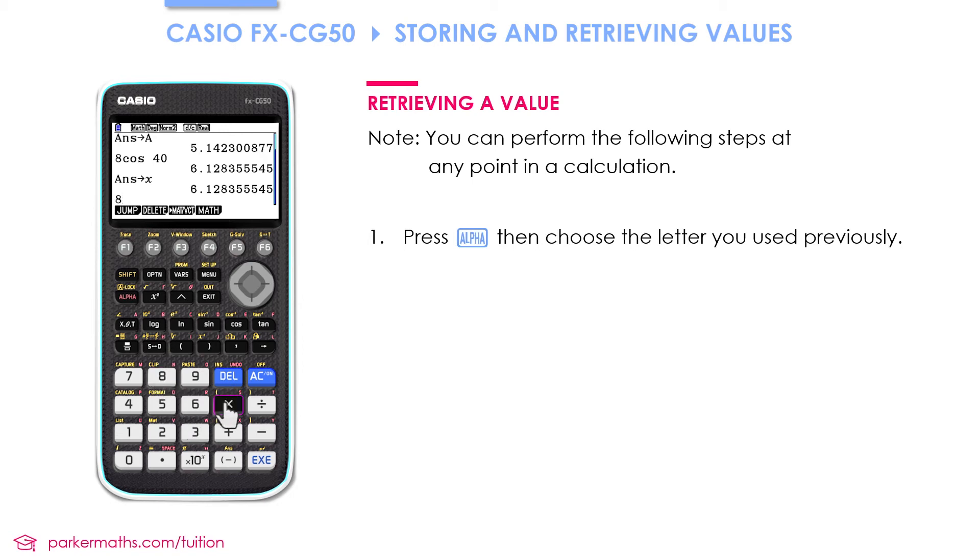So I could do 8 times, and then to retrieve my value if it's stored as A, I press alpha and then A, just like when I was storing it, and that would do 8 times A. I've also got a value stored under X. Remember, perhaps I want to do 9 minus X, and there's the answer to that.